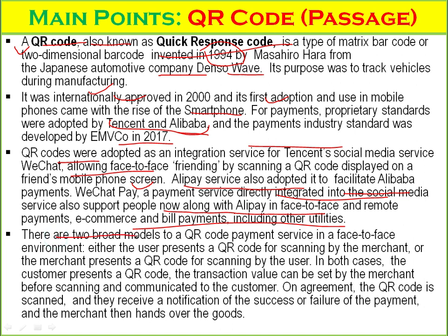There are two broad models regarding QR code payment service in a face-to-face environment: either the user presents a QR code for scanning by the merchant, or the merchant presents a QR code for scanning by the user. The customer can display a QR code, and the transaction value can be saved by the merchant before scanning and communicating to the customer. A QR code is scanned and they receive notifications of success or failure of the payment. The merchant then hands over the goods.